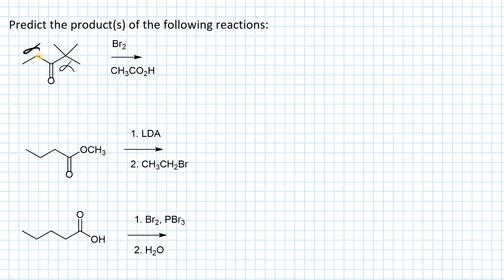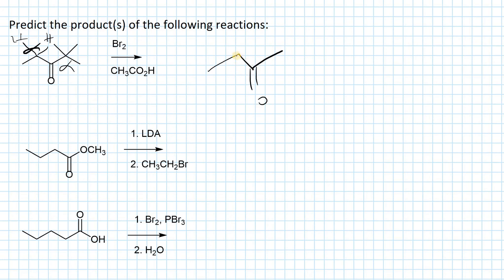At the first alpha position we have two acidic hydrogens and potentially a substitution product. In acid-catalyzed alpha halogenation, we form an enol intermediate, then that enol reacts with Br2 to give substitution at the alpha position. The product is the same ketone with bromine at the alpha position.